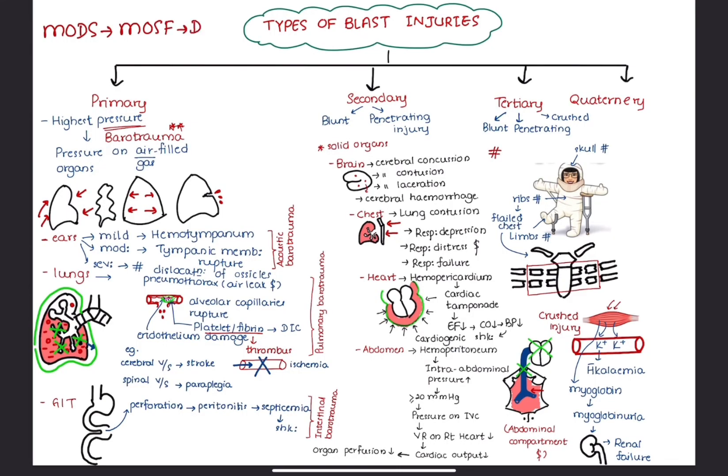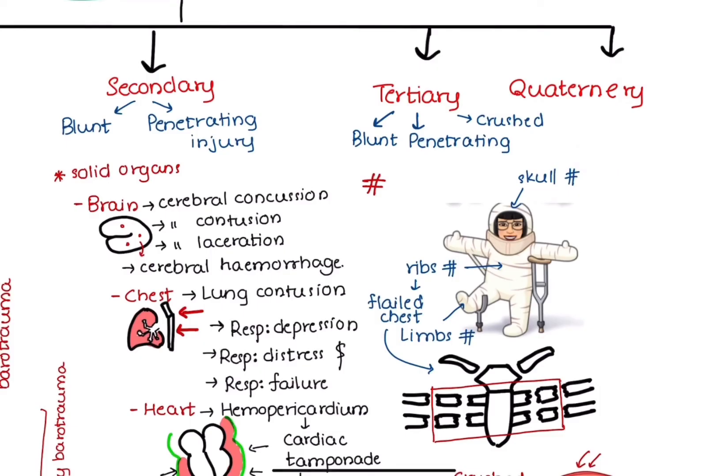All explosion-related injuries not due to primary, secondary, and tertiary blast injuries are considered quaternary blast injuries. If explosions occur in confined places like a building or a vehicle, there is rapid running out of oxygen, causing carbon monoxide poisoning and inhalational injuries.